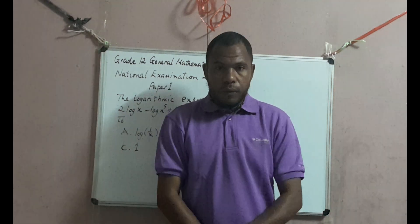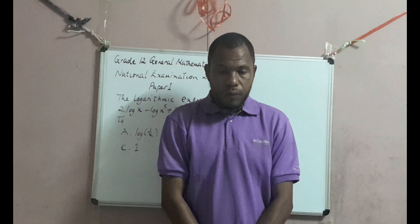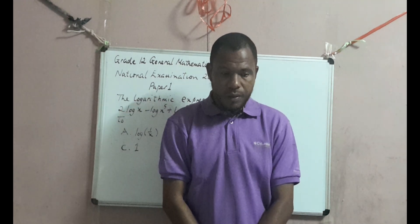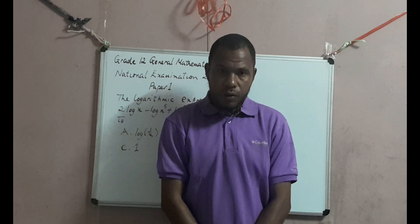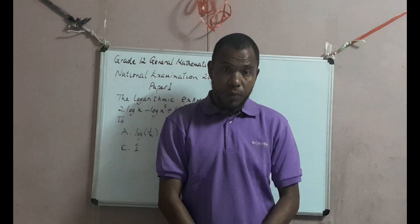Hello everyone. For this video I will be going through one of the past national examination questions. As you are preparing for your national examination, do not forget to check my channel. This question is coming from Grade 12 General Mathematics National Examination 2018, Paper Number One. The logarithmic expression: 2 log x minus log x raised to the power of 5, plus log x cubed, is equal to: A) log(1/x), B) log x, C) 1, D) 0.